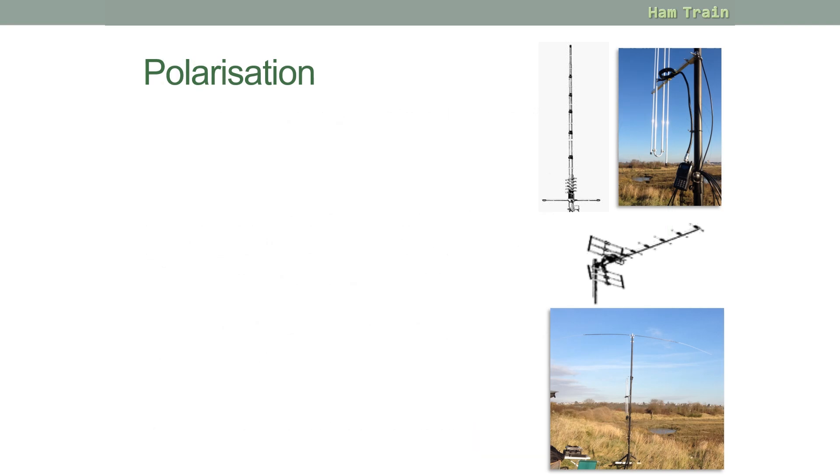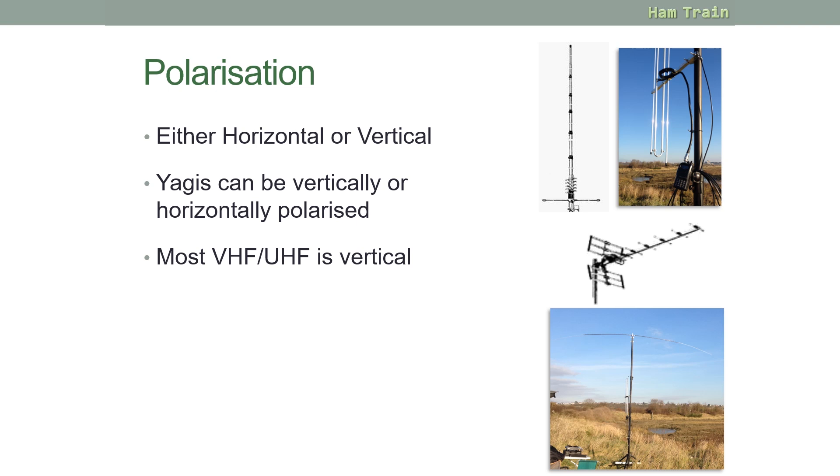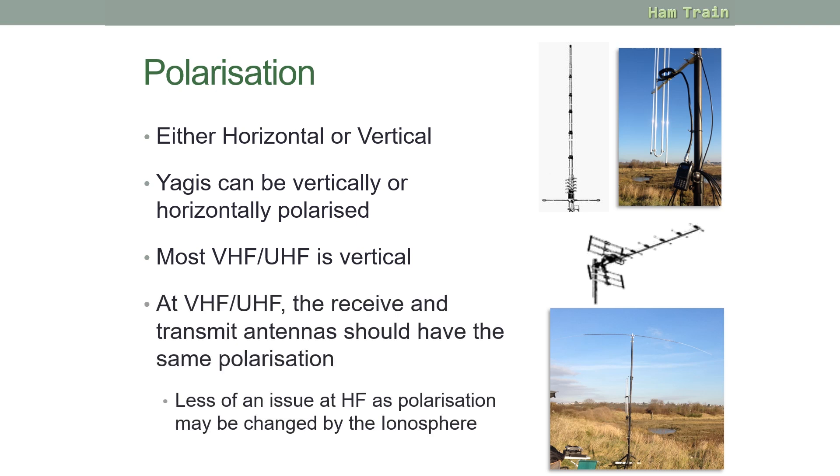Moving on to polarisation. In amateur radio circles, you can either have an antenna horizontally polarised or vertically polarised. The antenna I'm showing you here, the 5 8th wave, is vertically polarised. The dipole antenna pictured here is horizontally polarised. The Yagi antenna, in the middle here, can either be vertically or horizontally polarised. Most VHF and UHF work is done vertically. At VHF and UHF, ideally you want both ends, the transmitter and the receiver, to have the same polarisation, to catch as much of the energy that's being transmitted as possible. Polarisation is less of an issue at HF. HF relies on your signal being bounced off the ionosphere, as we'll discuss in the next module. Because your signal is being refracted from the ionosphere, it could come back at any polarisation, either vertically or horizontally, so it's less of an issue at HF.